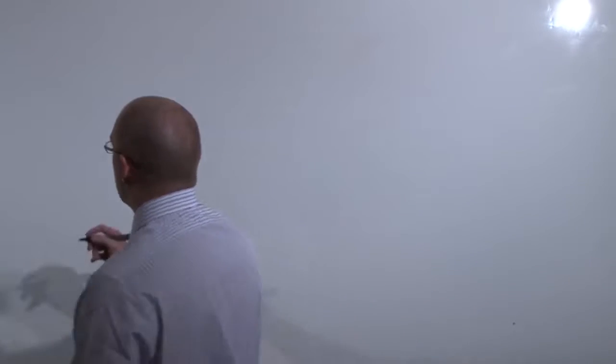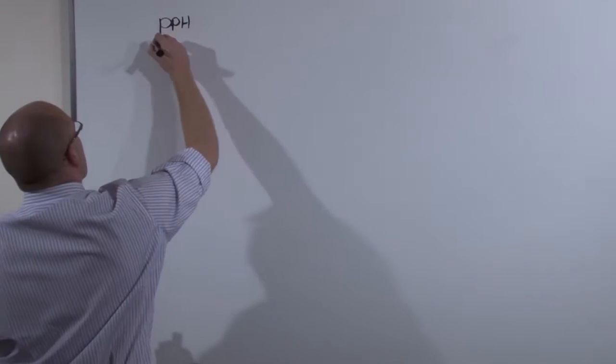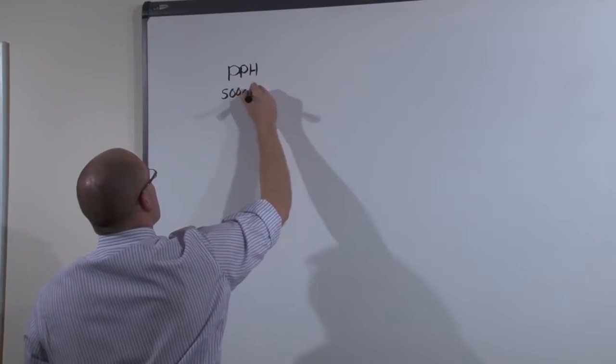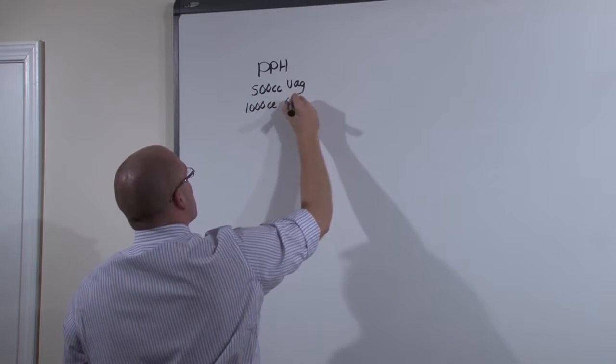Therefore, postpartum hemorrhage is defined by 500 cc's after a vaginal birth and 1,000 cc's after a c-section.